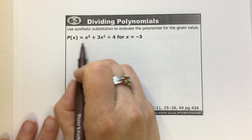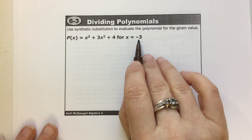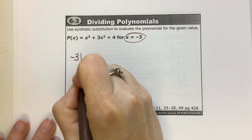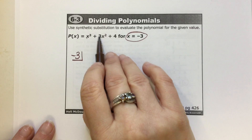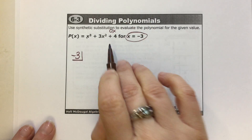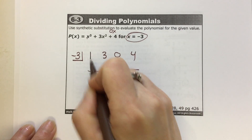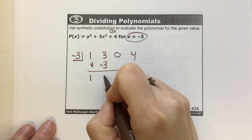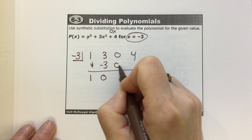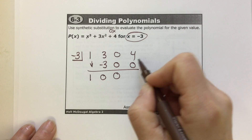Last question: if I want to know what x³ plus 3x² plus 4 is when replacing all x's with negative 3, I can use synthetic division. The polynomial: 3x², 2x, 1x, no x's — coefficients are 1, 3, 0, 4. Bring down 1. 1 times negative 3 is negative 3. 3 plus negative 3 is 0. 0 times negative 3 is 0. 0 plus 0 is 0. 0 times negative 3 is 0. 4 plus 0 is 4.